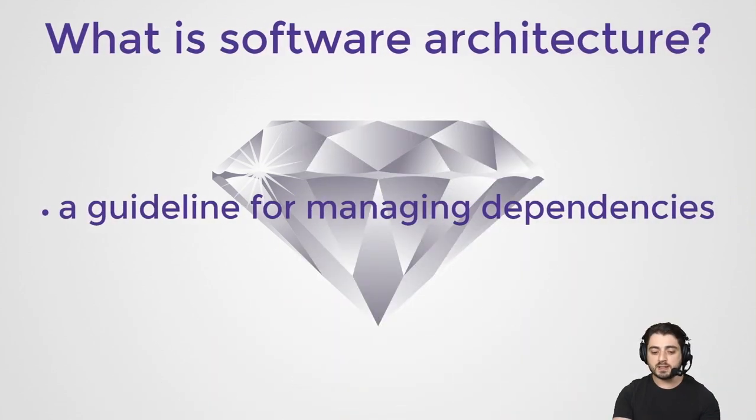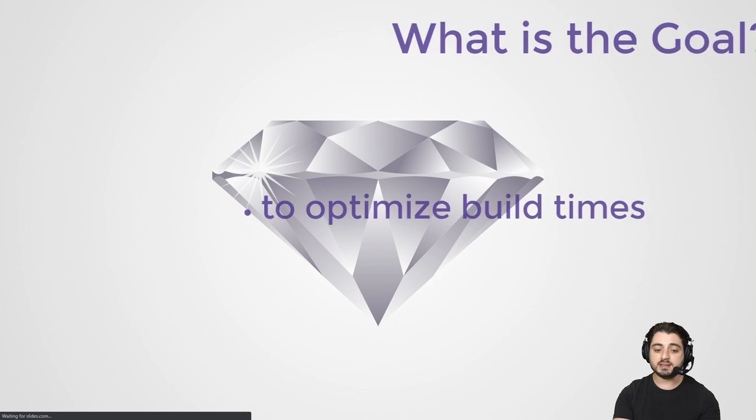I only have one new slide, but I want to quickly recap all the previous slides from the previous video. As a reminder, it's called diamond architecture because the boxes that represent the dependencies can be arranged in such a way that they form a diamond. The first slide was about what architecture is — it's just a guideline for managing dependencies.